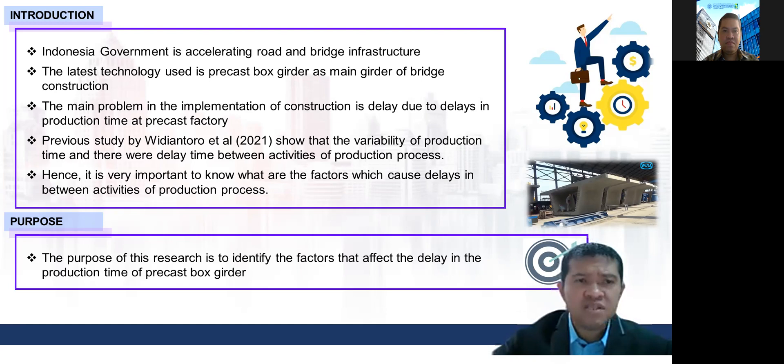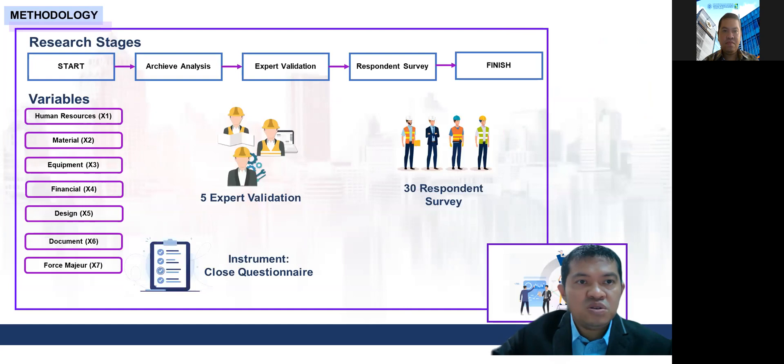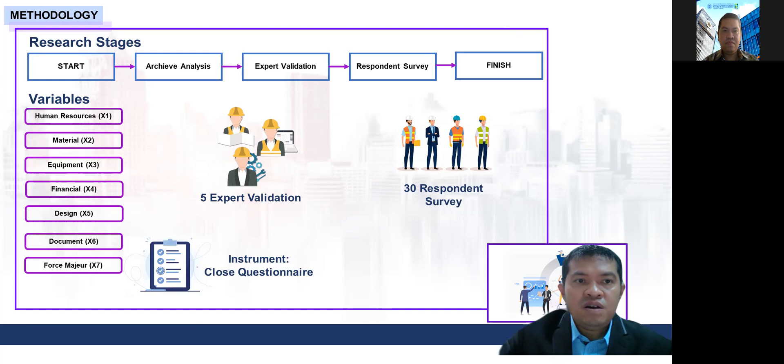The purpose of this research is to identify the factors that affect the delay in the production time of the precast box girder. The research methodology stages are: start, literature review, analysis, expert validation, respondent survey, and finish.